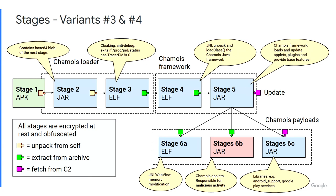Stage 6B is what we consider the malicious payload — there are more than 15 different malicious payloads that we know of thus far, and they're still being developed. Stages 6A and 6C exist to support 6B in doing malicious behavior. For example, 6A will do JNI web view modification to support some of their ad fraud behaviors, using native code to support what the jar needs to do.